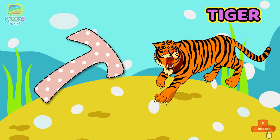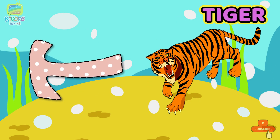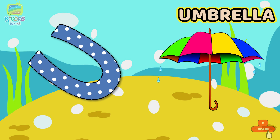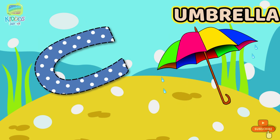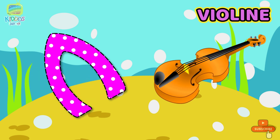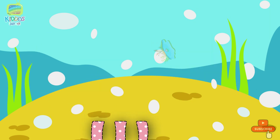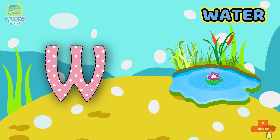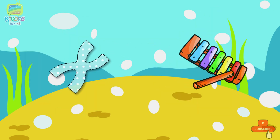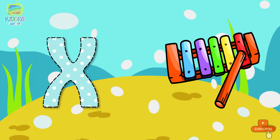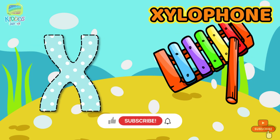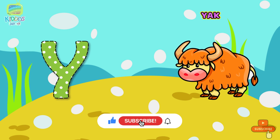Tiger, Tiger. U is for Umbrella, Umbrella. V is for Violin, Violin. W is for Water, Water. X is for Xylophone, Xylophone. Y is for...